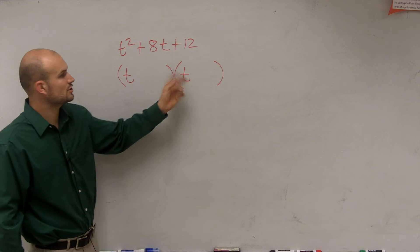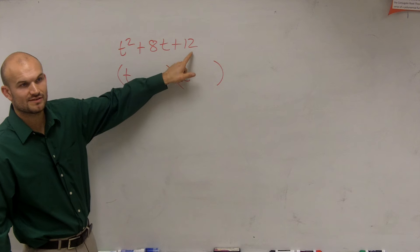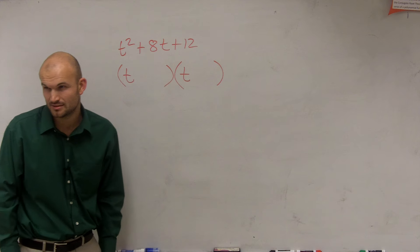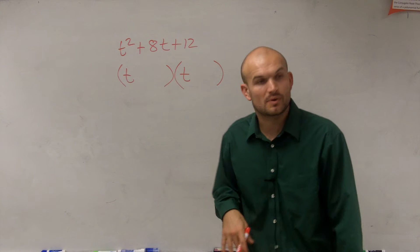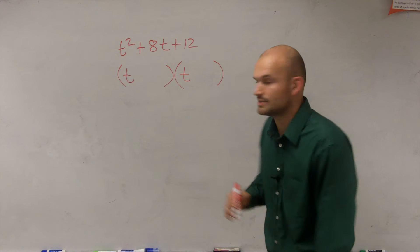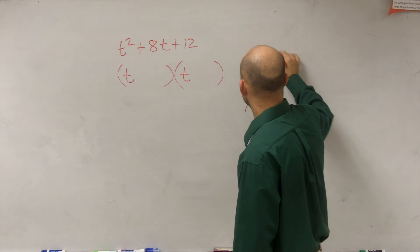What we need to do is determine what are my last two numbers that multiply to give us 12 but add to give us 8. So a lot of times what I like to do, I like to set up a nice little x.